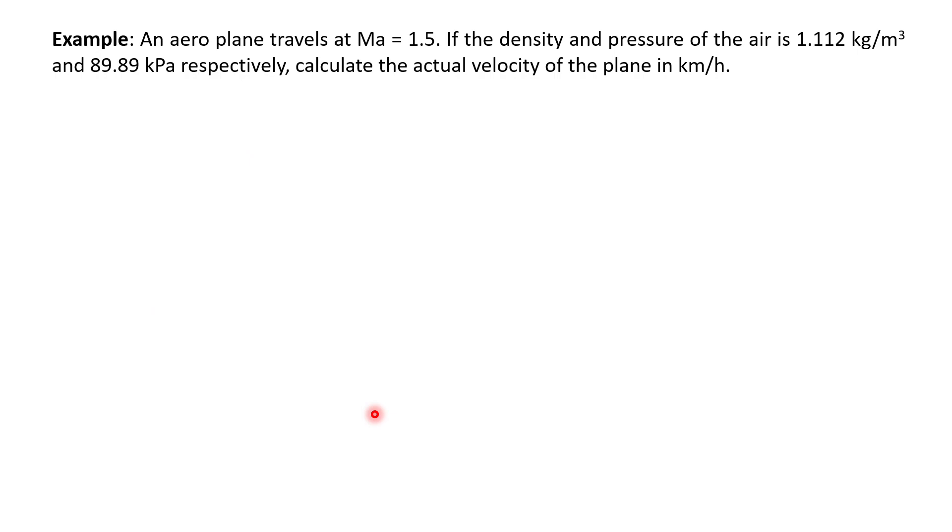In another example, we have an airplane traveling at Mach number of 1.5. If the density and the pressure of the air is 1.112 kilograms per cubic meter and 89.89 kilopascals respectively, calculate the actual velocity of the plane in kilometers per hour. This is very simple. I think this is a straightforward equation. From first of all, we try to collect all of the available information in the problem.